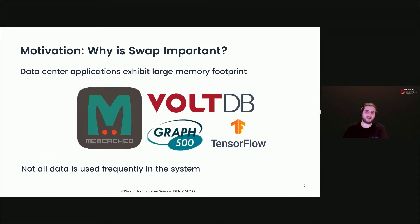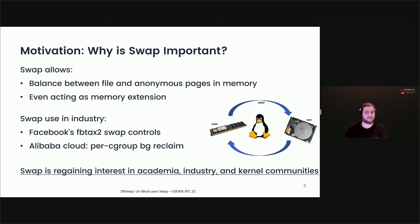Over time, the demand for additional memory and servers increases. Data center applications exhibit larger and larger memory footprints, but not all data is born equal. Some data is used more often than others, or some data in memory belongs to files and others do not. Whenever the system is under memory pressure, it relieves it by reclaiming system memory. During memory reclamation, file-backed pages are discarded or written back to the backing device to free up memory.